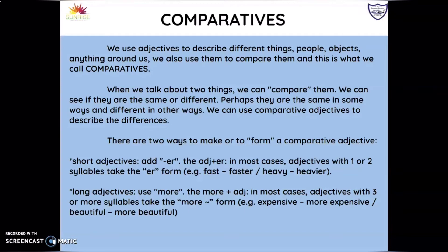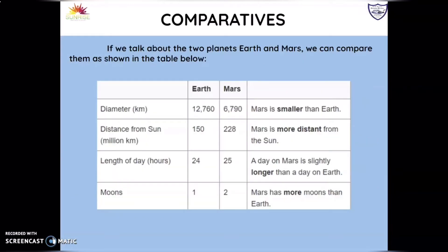We're going to see this more in depth with examples further in the presentation. Let's say we're talking about two planets — Earth and Mars — and we can compare them as shown in the table. For example, Earth is bigger than Mars, so it has more diameter than Mars.